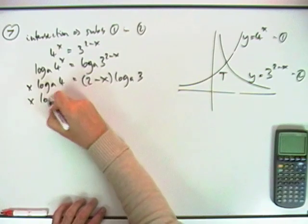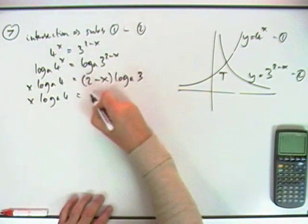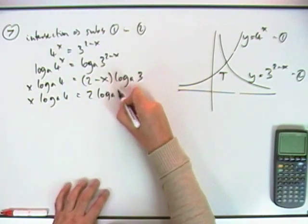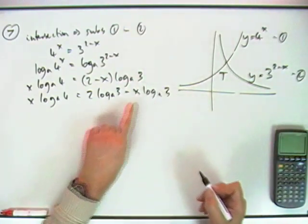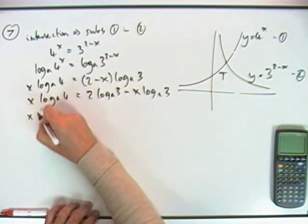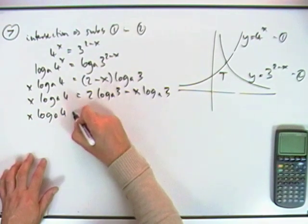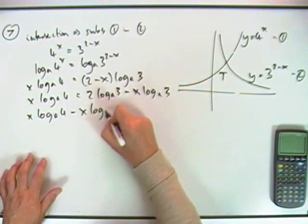I'll let that sit and wait just now, while I multiply that out. So that's 2 log A of 3 minus x times log A of 3. I'll bring that over to join this, so I've got x log A of 4 plus x log A of 3.